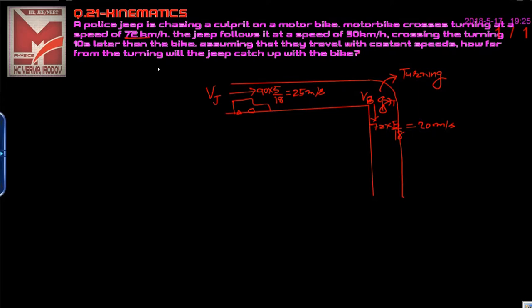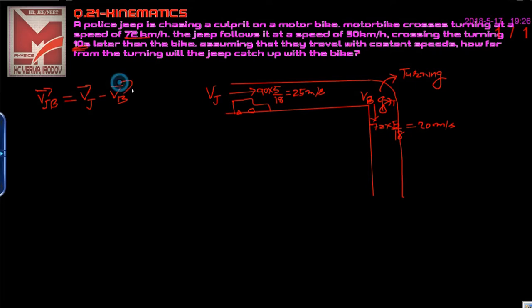We need to calculate how far from the turning the jeep will catch up with the bike, given that 10 seconds later the jeep reaches the turning. Because there are two objects, we apply the relative motion technique. The relative speed of the police jeep with respect to the bike is 25 minus 20, which equals 5 meters per second, since both are moving in the same direction.